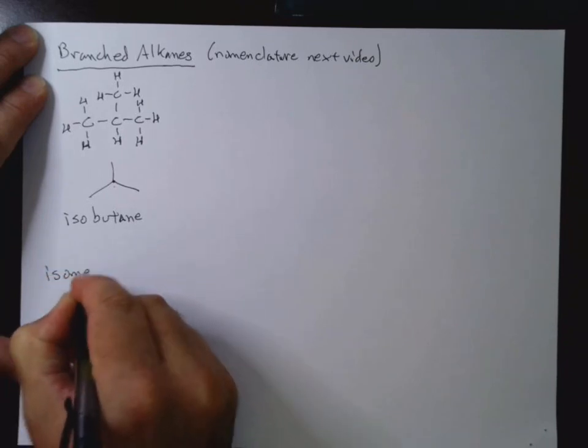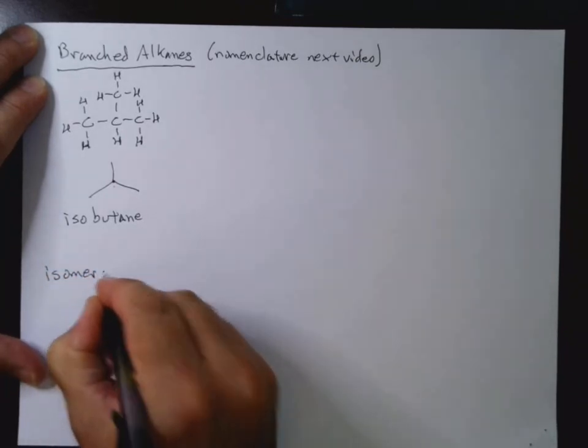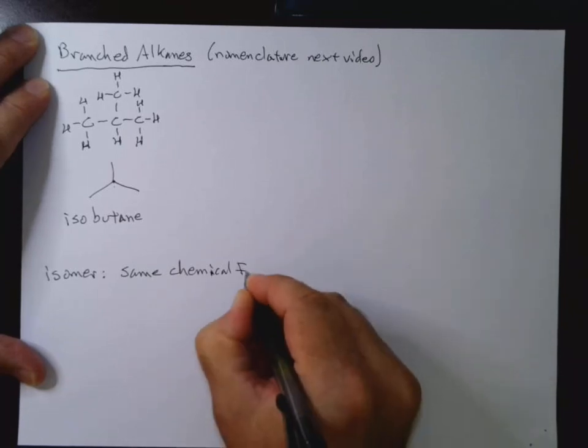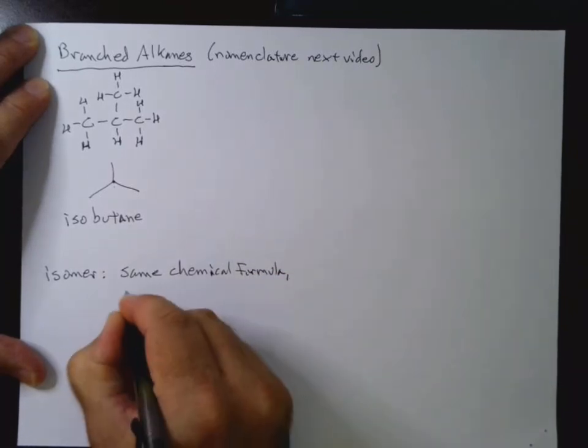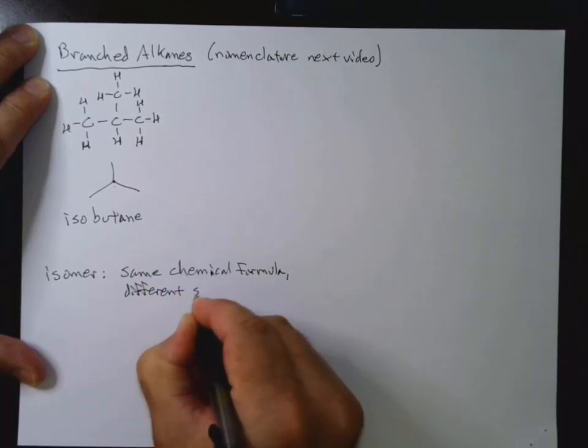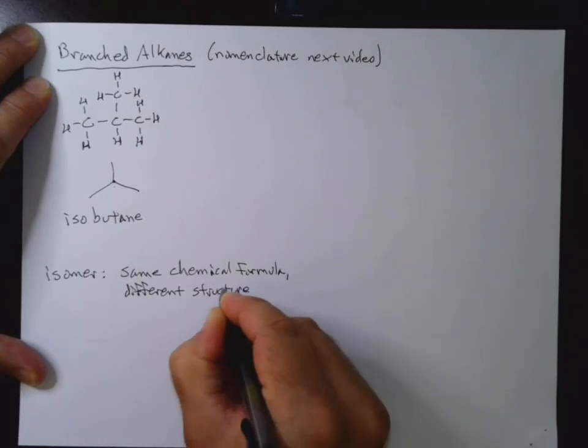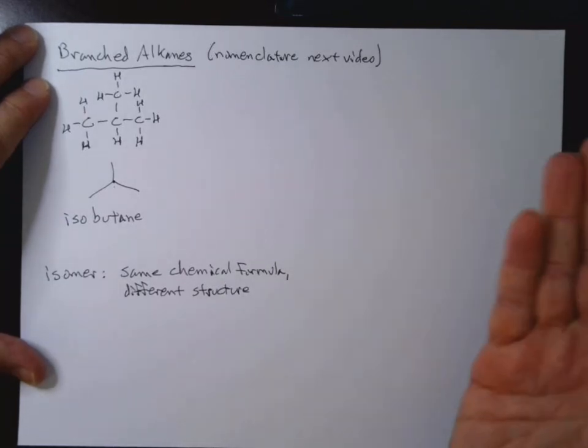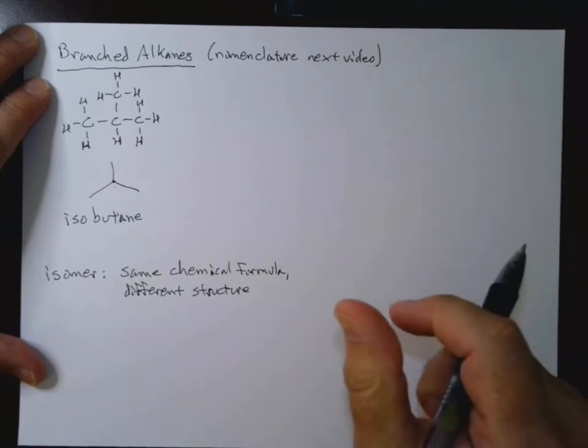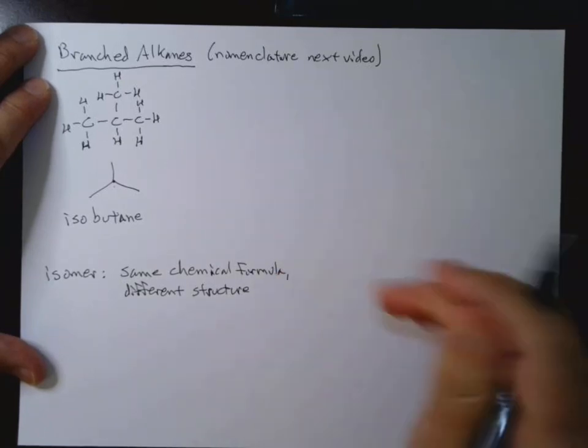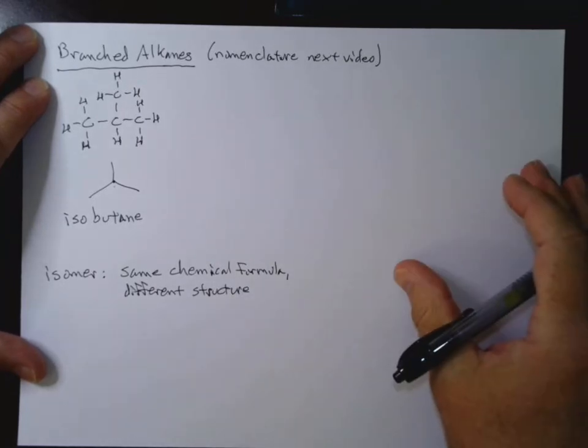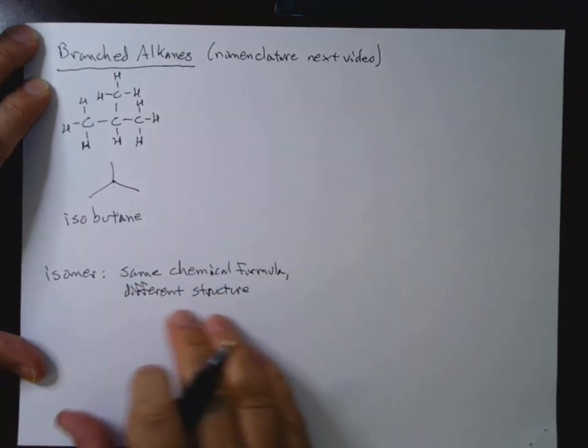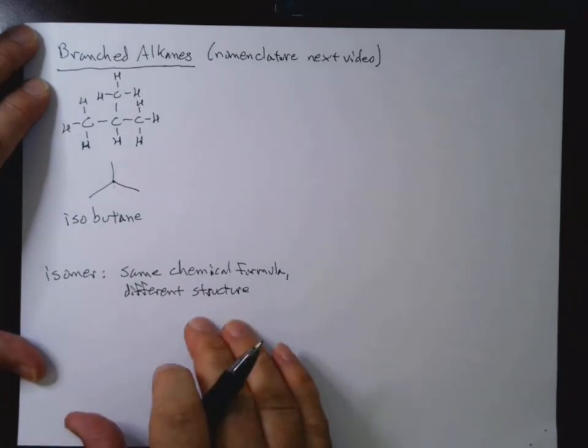And an isomer, if you don't remember from CH1B, is a compound with the same chemical formula, but a different structure. In Chapter 5, we'll look at some different types of isomers. And actually, we'll start looking maybe in Chapter 4, cycloalkanes, we'll look at some different types of isomers, the cis-trans isomers. But then we'll look at things called stereoisomers in more detail in Chapter 5.